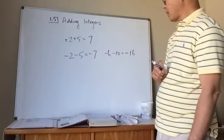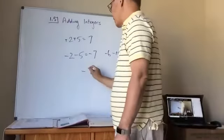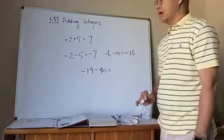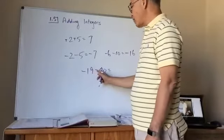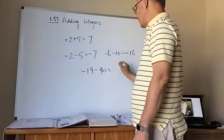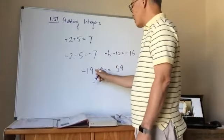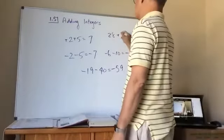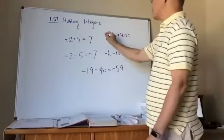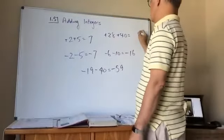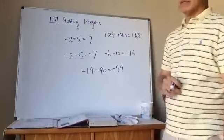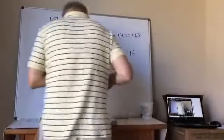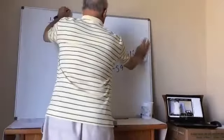For negative 19 minus 40, both are negative so I add them together to get 59 and use the common sign — negative 59. For 28 plus 40, both are positive, same sign, so I add to get 68 and it's positive.